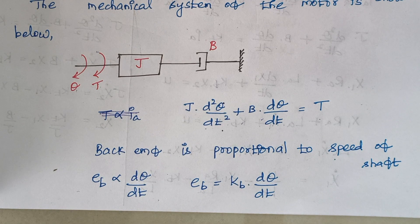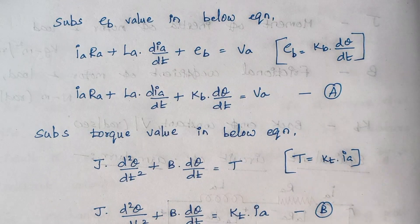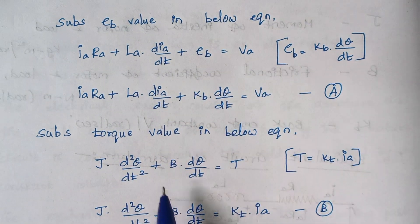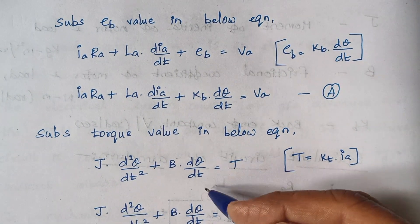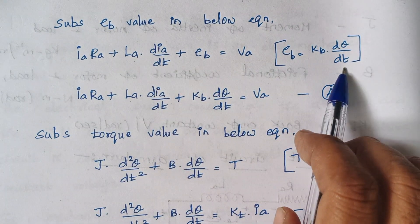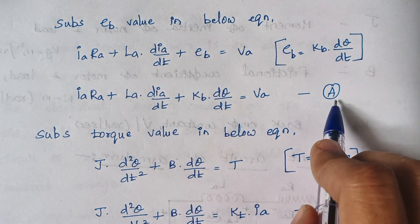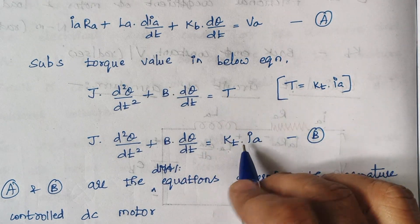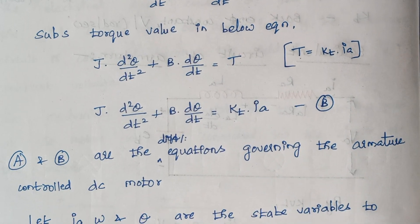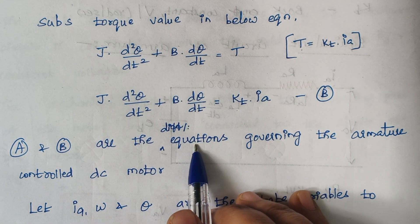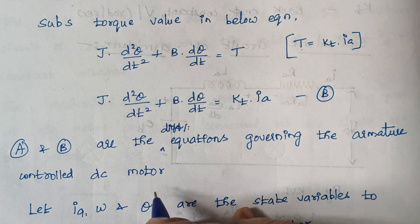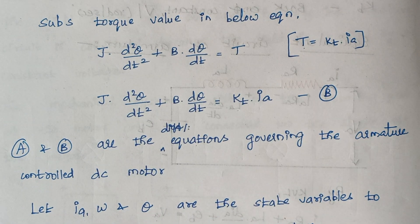We have analyzed the electrical part and then proceeded with the mechanical part, framing two equations — one from the electrical part and one from the mechanical part. We now replace the back EMF with its expression, marking this as equation A. Then we replace the torque term, marking that as equation B. Equations A and B are the differential equations governing the armature controlled DC motor.